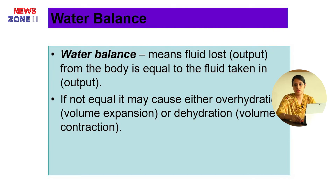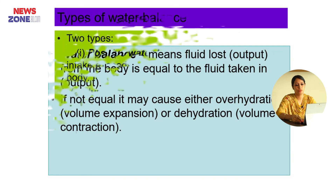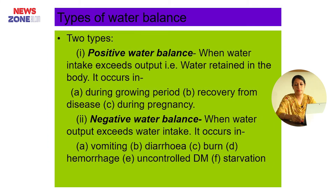Now, water balance. What is water balance? Water balance means fluid lost or output from the body is equal to the fluid intake into the body. If not equal, it may cause either overhydration — that is volume expansion — or dehydration — that is volume contraction. There are two types of water balance: positive water balance and negative water balance. Positive water balance is when water intake exceeds output; water is retained in the body. It occurs during the growing period, during recovery from disease, and during pregnancy. Negative water balance is when water output exceeds intake; it occurs in vomiting, diarrhea, burn, hemorrhage, uncontrolled diabetes, malnutrition, and starvation.